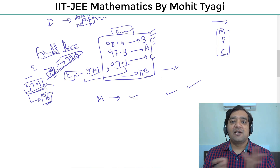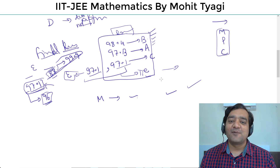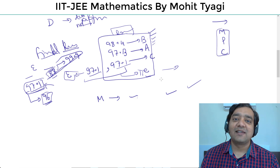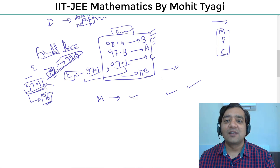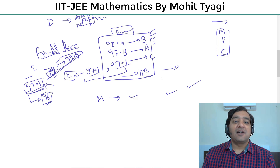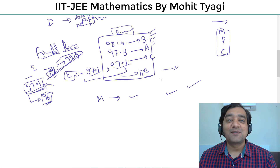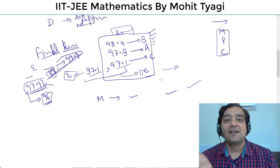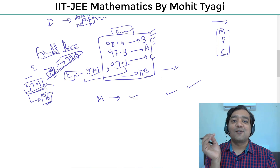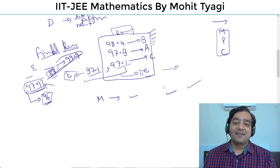हम usually कई सालों से teacher लोगों में बात करते हैं — Chemistry वाले सर बोलते हैं Chemistry tough है, Physics वाले सर बोलते हैं Physics tough है, Math वाले बोलते हैं Math सबसे tough है क्योंकि चीज़ें काफी abstract होती हैं। तो JEE ने kind of यह clear कर दिया है कि Math ही सबसे tough है, इसलिए जो भी Math percentile ज़्यादा लेके आ रहा है उसको उन्होंने ज़्यादा intelligent माना है और rank ऊपर दिया है।